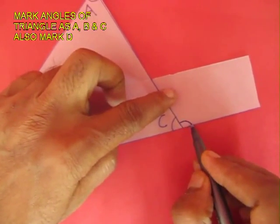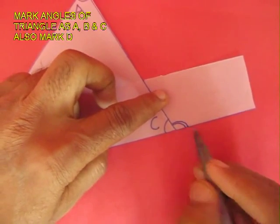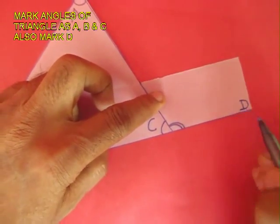This is the exterior angle with double lines. Also mark the point D.